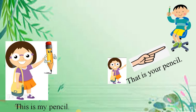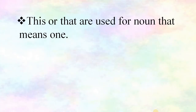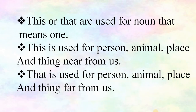Look at the next example: this is my pencil, that is your pencil. Let's recall — this or that are used for a noun that means one. This is used for a person, animal, place, or thing near to us. That is used for a person, animal, place, or thing far from us.